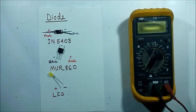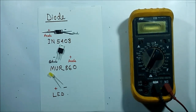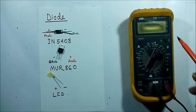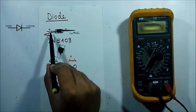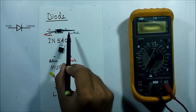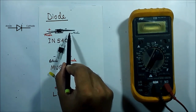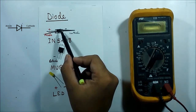Hello viewers, welcome to Tech Study Cell. In this video we will discuss how to check different types of diodes with the help of a digital multimeter. To check the diode, we know that a diode has two terminals — one is the anode, which is the positive terminal, and one is the cathode, which is the negative terminal.